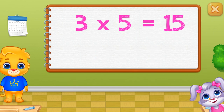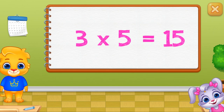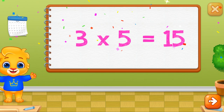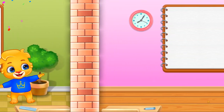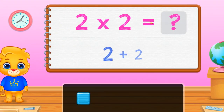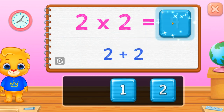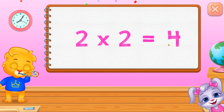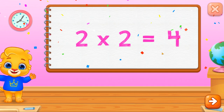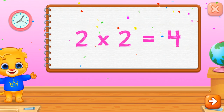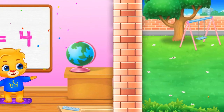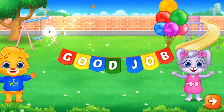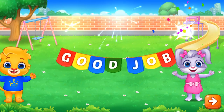15. 3 times 5 equals 15. 4. 2 times 2 equals 4. Good job, good job.